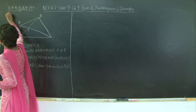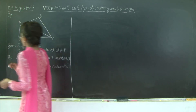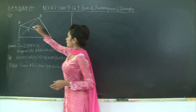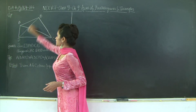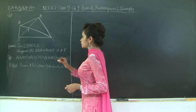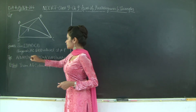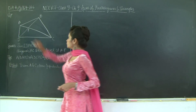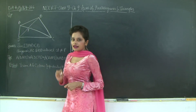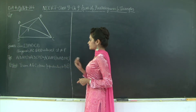I missed out mentioning the sum number. This is sum number 6, wherein we have quadrilateral A, B, C, D and diagonals AC and BD of this quadrilateral intersecting at point P. We need to prove that area of triangle APB multiplied by area of triangle CPD is equal to area of triangle APD multiplied by area of triangle BPC.